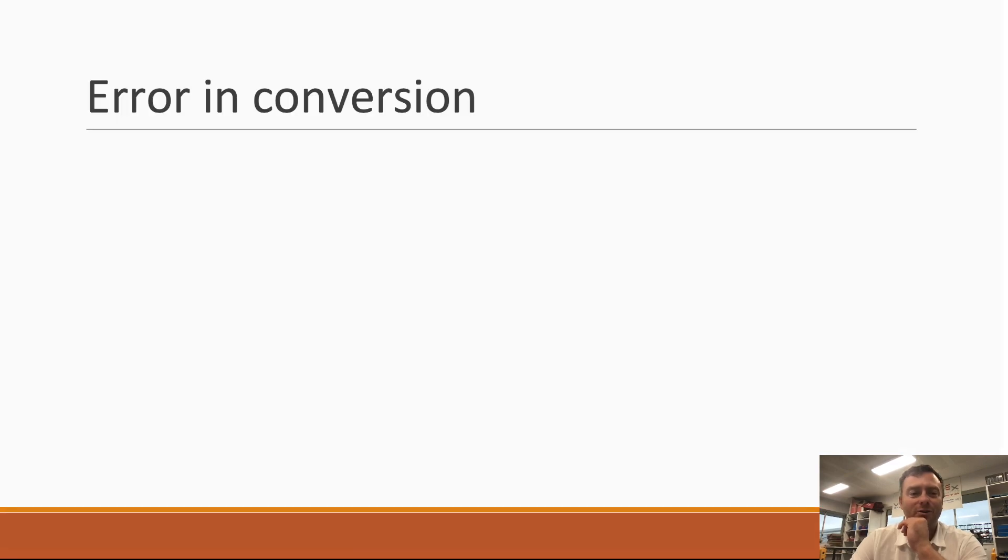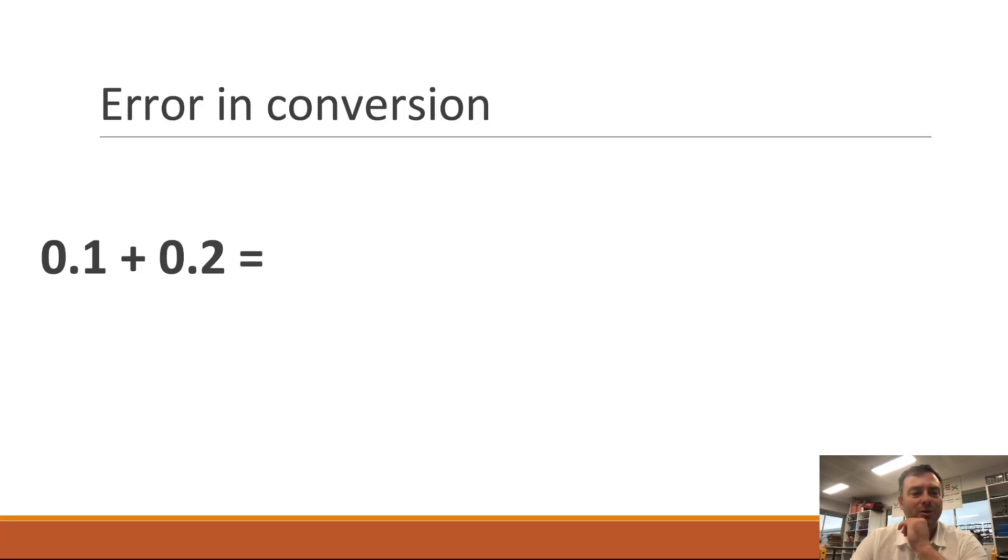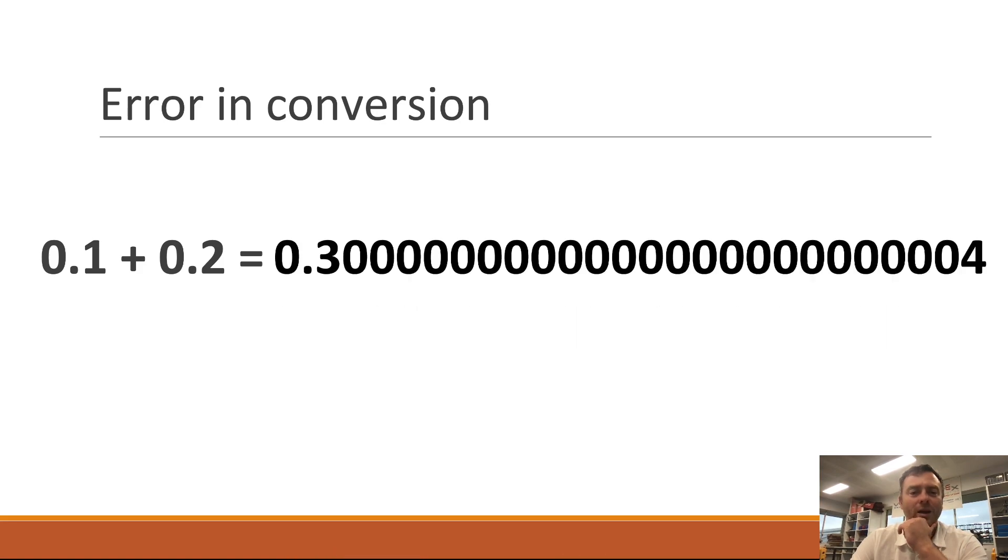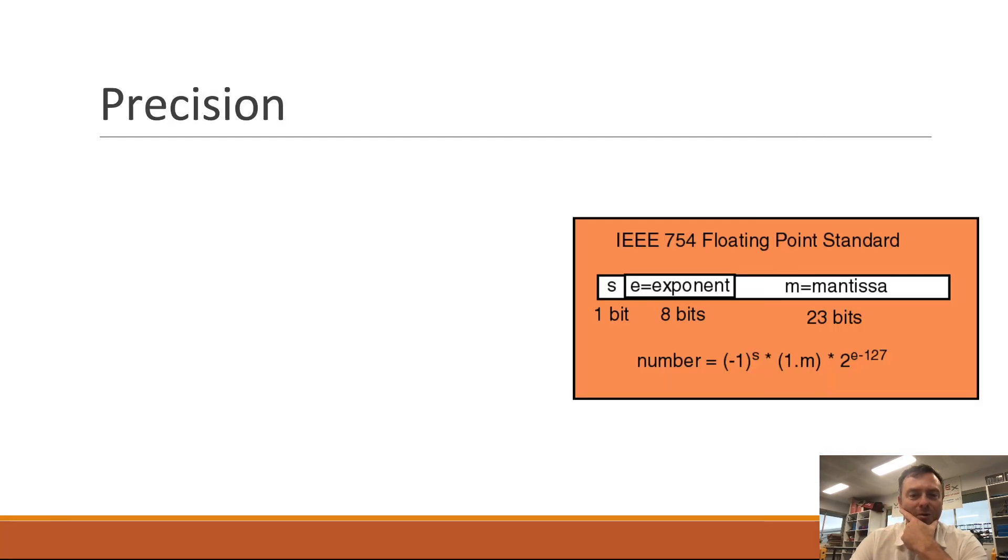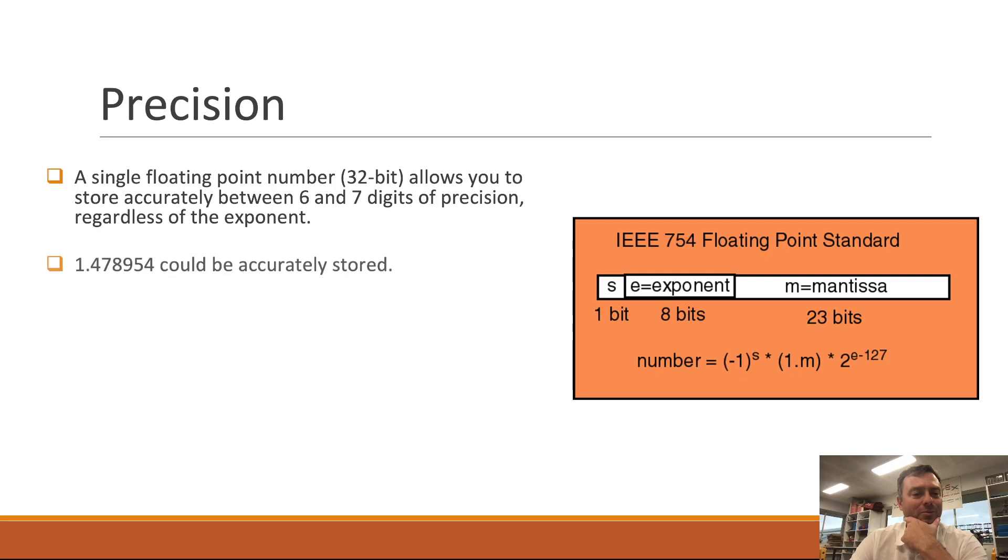Now with the floating point algorithm it is only accurate to six decimal places, sometimes seven depends on the number. So you need to be mindful of that with the error conversion. So if you store 0.1 plus 0.2 in your computer and then type it, it will actually give you that as the answer which is kind of weird. Now if you think about it it is accurate to six decimal places. If you come down here to the sixth decimal place that is correct. But if you go all the way down I don't know to the 19th decimal place whatever that is you can see a 4. So this is because the way that the floating point algorithm works it's not accurate once you get past that decimal place.